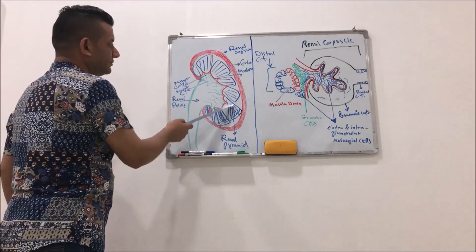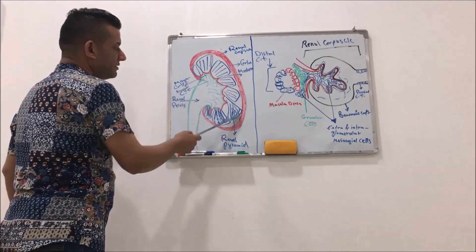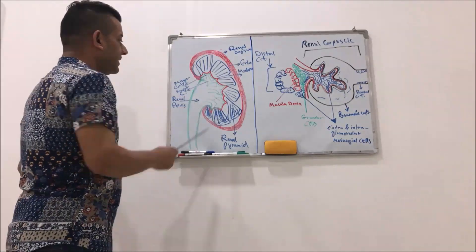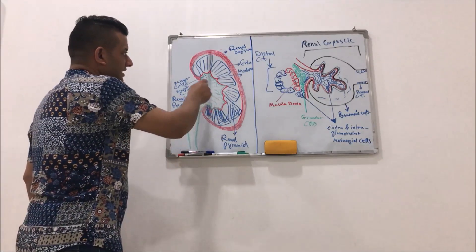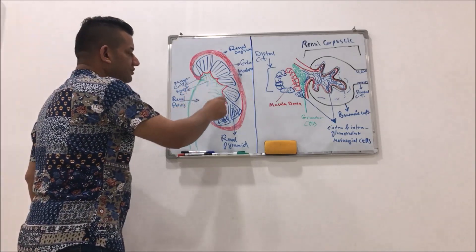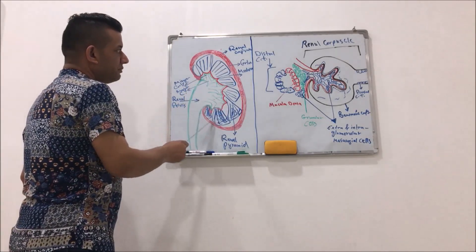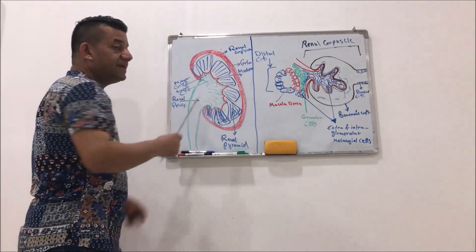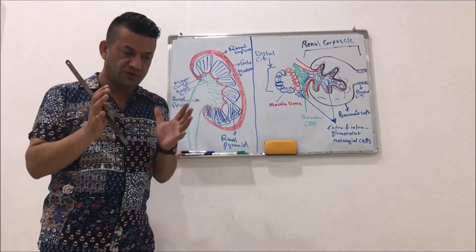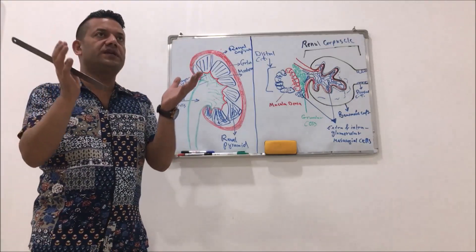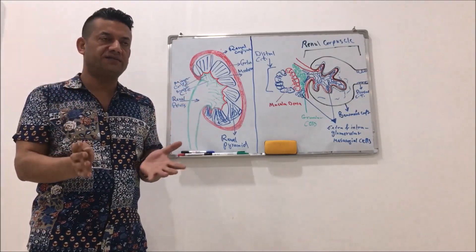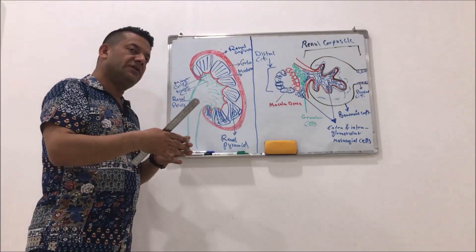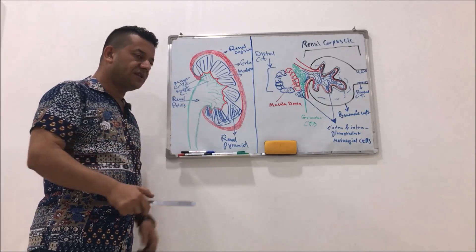And the medulla. Beneath the cortex lies the medulla. The kidney as a whole is surrounded from the outside by renal capsule. So the renal capsule is connective tissue which envelops the kidney from outside surface. So let's dissect the kidney anatomically and notice the structure.